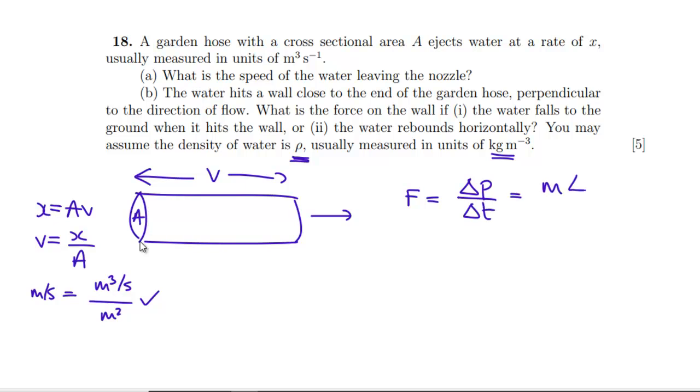So our force is going to be the rate of change of our momentum. So that will be M delta V over delta T. So we want the mass per second multiplied by the change in the velocity. So what mass have we got on all of this? Well, mass per second is going to be our volume per second multiplied by the density. So that's going to be volume per second multiplied by density. That's our mass per second. And then we need to multiply that by our delta V, which is going to be the same as V, which would be X over A.